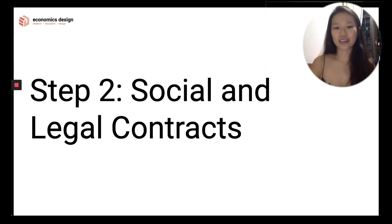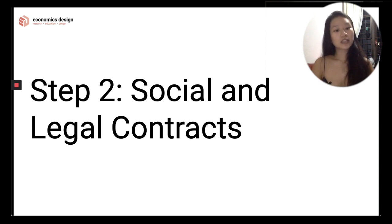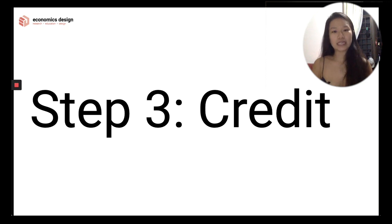Step 2: Social and Legal Contracts. Having the state accept the money is not enough — there need to be social contracts between users to accept it. For example, if we both live in Argentina but are unsure about the stability of the peso, we might decide to trade in USD instead. The central bank cannot control that; as long as you pay taxes in the local currency, they can't control what goes on in between. One way to increase trade in a currency is to increase trust and confidence in it, and benefit from network effects.